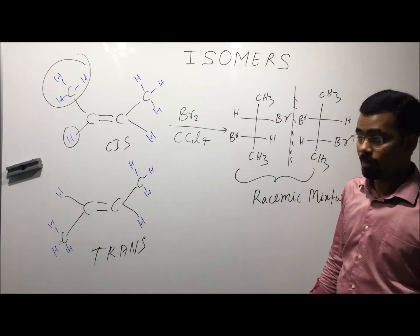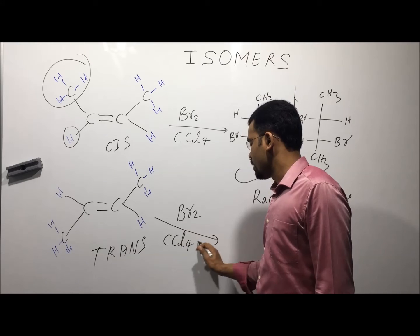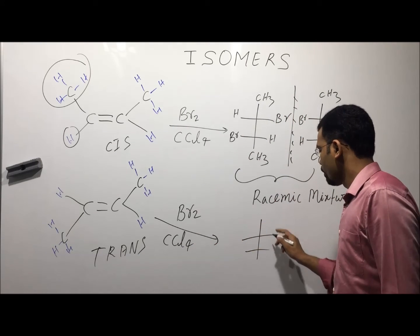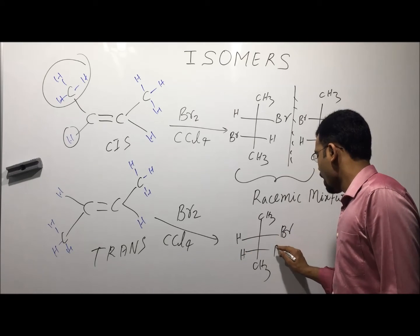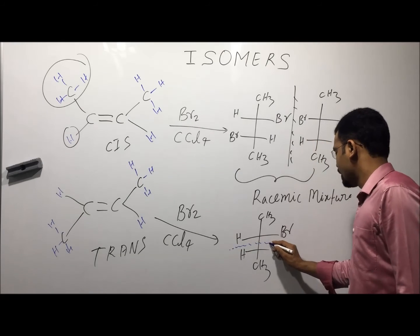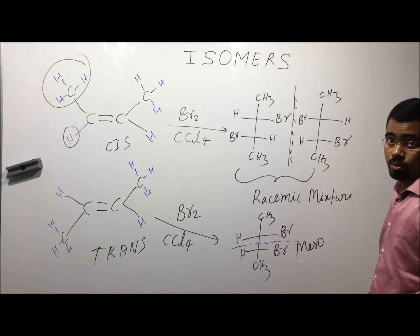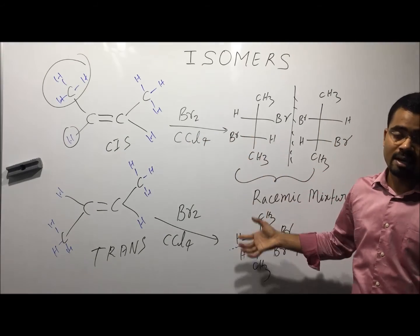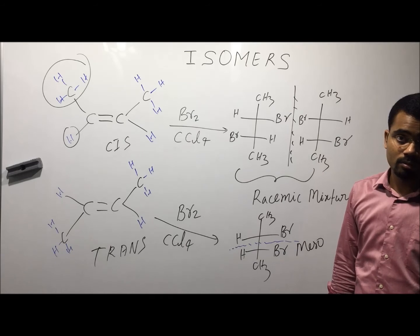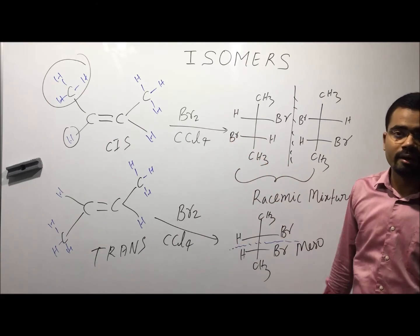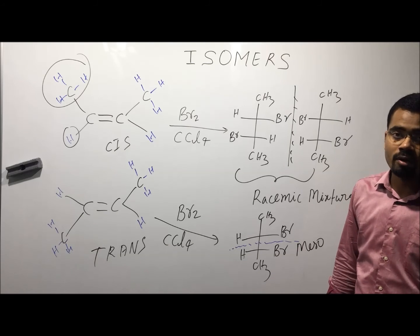When trans-butene reacts with bromine in CCl4 (a non-polar solvent), it gives a product that is optically inactive because it has a plane of symmetry — this compound is meso. So both cis and trans isomers have different chemical properties as well as physical properties, but the same molecular formula and same connectivity; therefore both come under the category of stereoisomers, or specifically geometrical isomers.